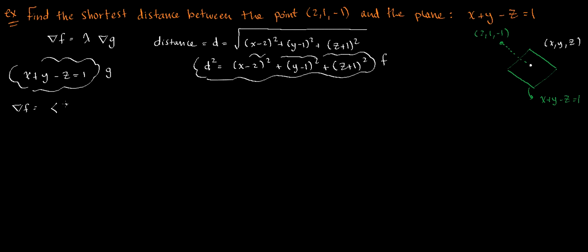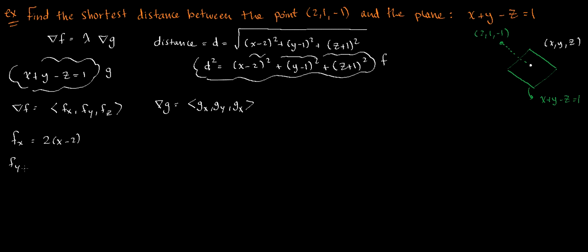Now let's compute the gradient of both functions: the gradient of f, which is fx, fy, fz, and the gradient of g, which is gx, gy, gz. For fx, differentiating with respect to x gives 2 times (x minus 2). For fy, differentiating with respect to y gives 2 times (y minus 1). For fz, differentiating with respect to z gives 2 times (z plus 1). For gx we get 1, for gy we get 1, and for gz we get negative 1.